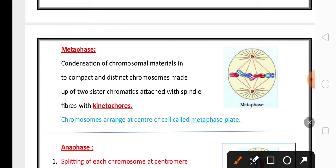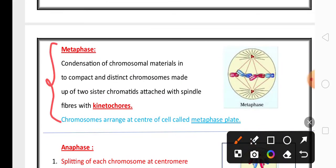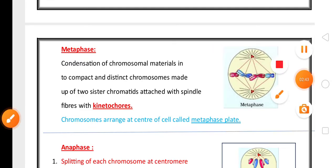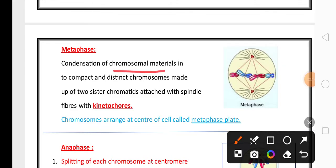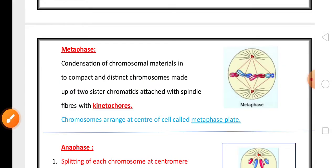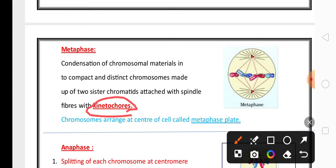The second phase is metaphase, also a two mark very important topic for the exam. In metaphase, chromosomal material becomes compact and distinct, forming two sister chromatids. The sister chromatids attach to spindle fibers with kinetochores. Kinetochore helps the sister chromatids attach themselves to the spindle fiber.